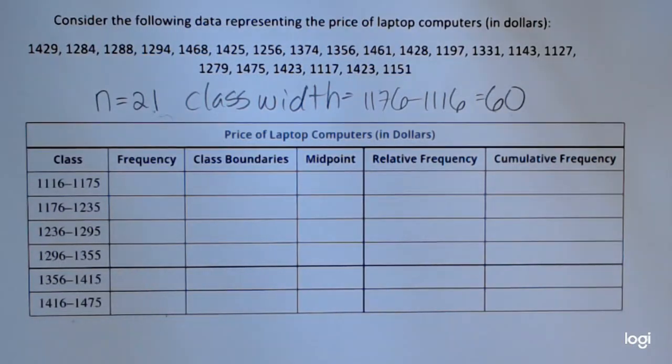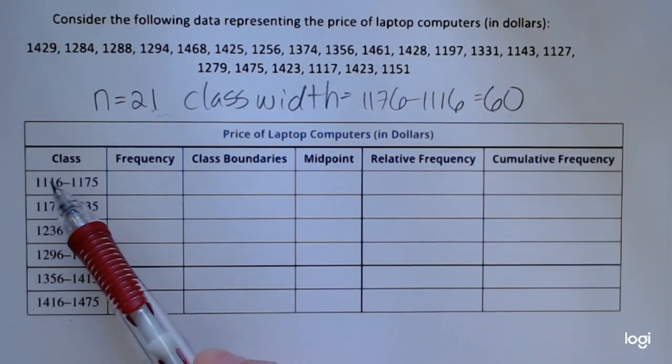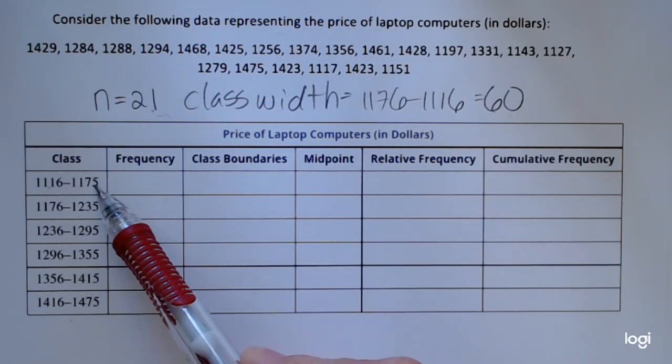Another thing that is asked for in a frequency distribution problem typically is the class width, and this is the common mistake I see from students. Given the class limits, students tend to want to subtract a lower class limit from its corresponding upper class limit, and that is not correct.